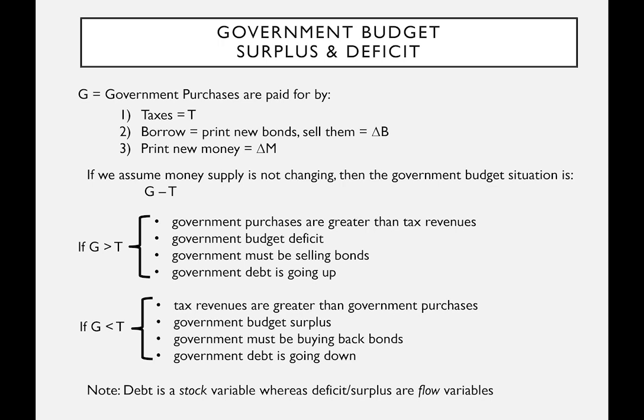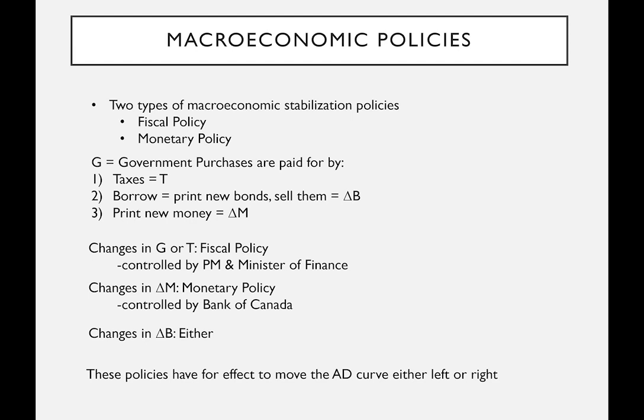An important distinction: the current government debt — all outstanding bonds that have been sold — is a stock variable, like the amount of water in a swimming pool. The budget deficit or surplus, whether the government is buying or selling bonds, is a flow variable, like water going into or coming out of a pool. This distinction between stock and flow variables is important in economics.